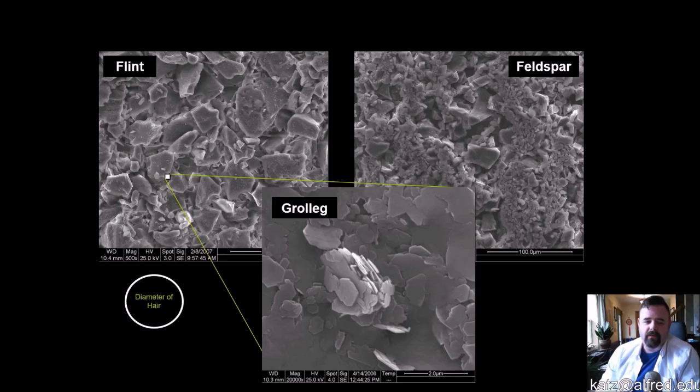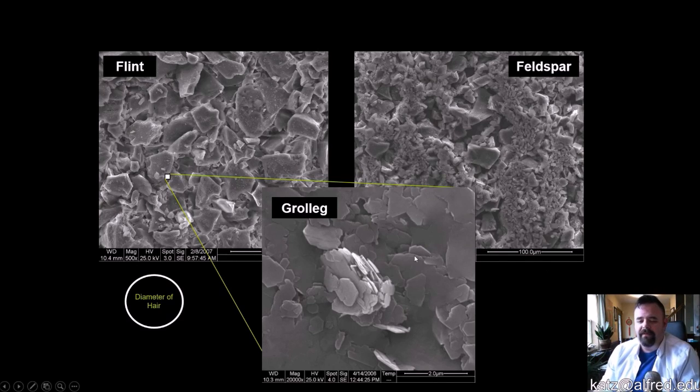Here's the problem. This is growling as we've seen. This is a two micron size bar. That's how close we have to get in. That is 50 times closer than we have with growling. This is a 20,000x magnification, whereas this is 500x magnification to see the raw grains.